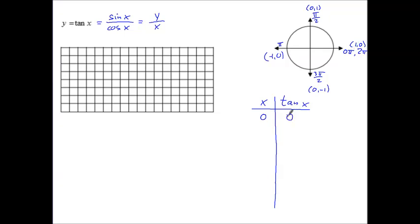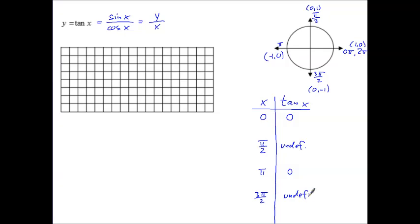At pi over 2, we have 1 divided by 0, which is undefined. At pi, we get 0 over negative 1, which is 0 again. At 3 pi over 2, negative 1 divided by 0 is undefined again. And back at 2 pi, we get 0 over 1, which is 0.